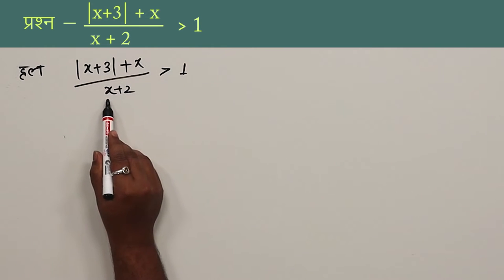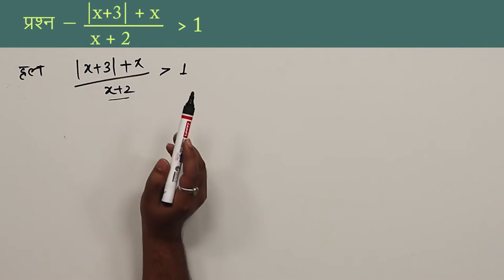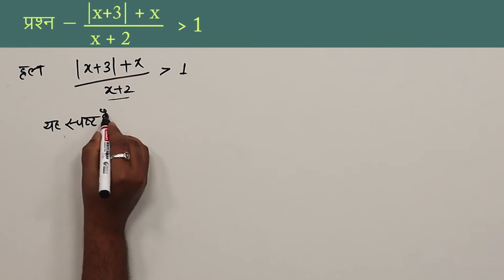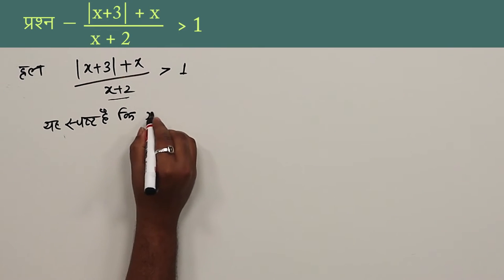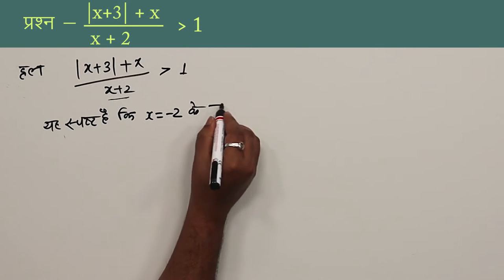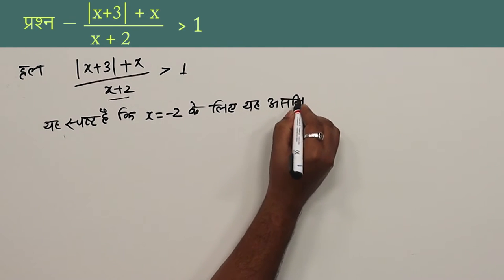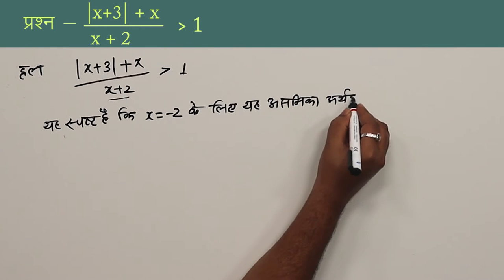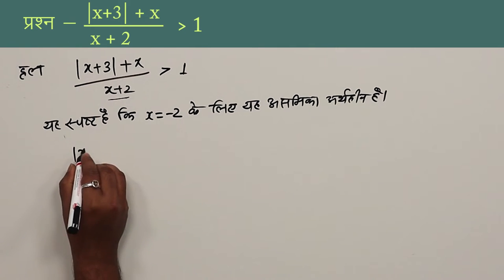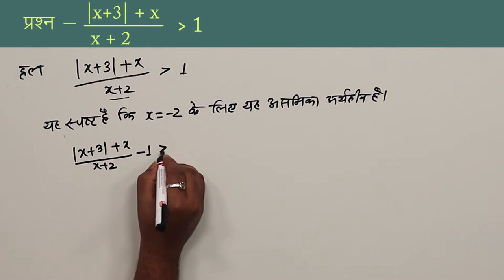We rewrite this as: mod of (x+3) + x/(x+2) minus 1 is greater than 0. Simplifying, we get mod of (x+3) + (x minus x minus 2) over (x+2) is greater than 0.